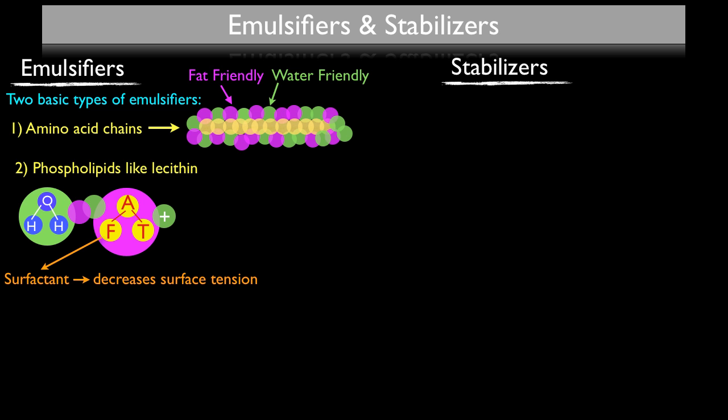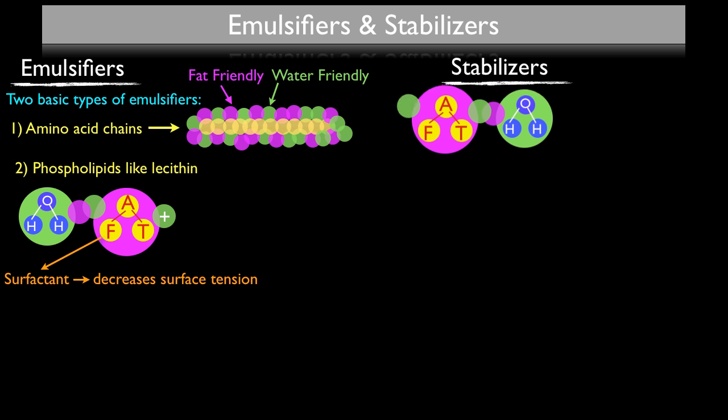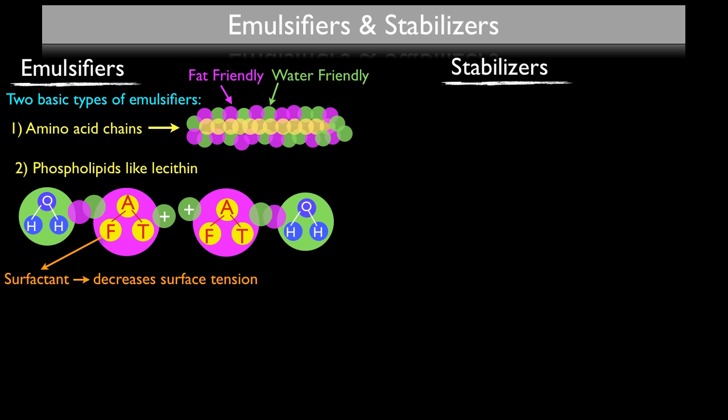Some phospholipids, like lecithin, also have the added benefit of a positively charged fat tail. When it comes into contact with other fat molecules in the same emulsion, those fat tails are also positively charged, so they will actually push each other away. This keeps the fat droplets from coming together and coalescing or pooling, which will eventually break your sauce.